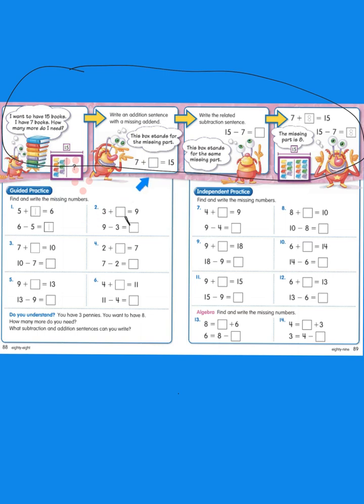Okay, remember this box right here stands for the missing part. You can write the related subtraction sentence to figure out what goes in this missing box. So 15 minus 7 equals 8. So 7 plus 8 equals 15. Remember these related addition problem and subtraction problems we did when we did the related facts? Okay, so let's get started.